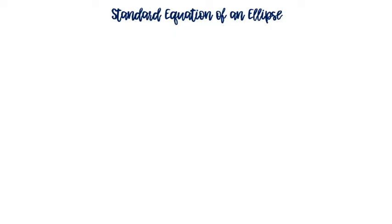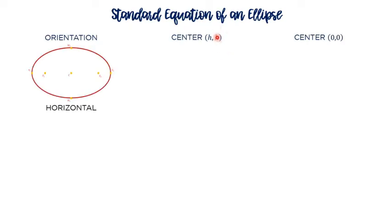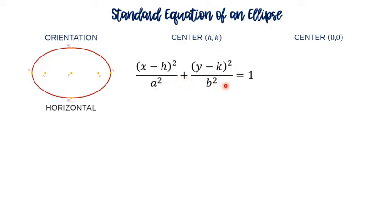Now, let's look at the forms of the standard equation of the ellipse. First, let's consider the ellipse with horizontal orientation. If the center is (h, k), the standard equation is: (x minus h)² over a² plus (y minus k)² over b² equal to 1. If the center is located at the origin, h and k become 0, and the equation becomes: x² over a² plus y² over b² equal to 1.